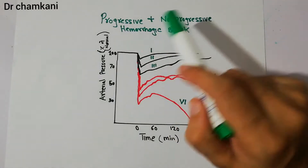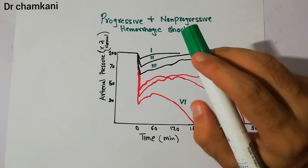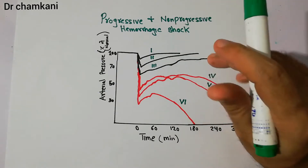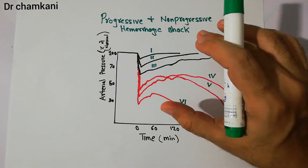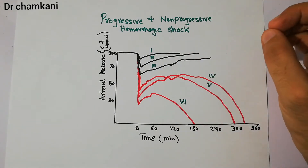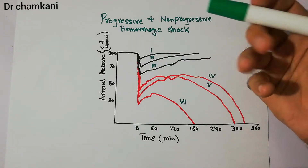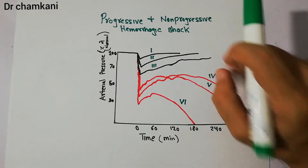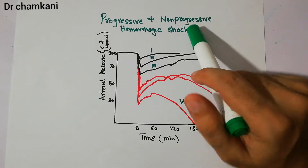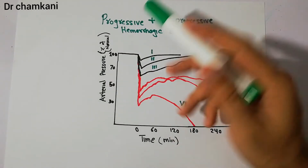Today we are going to talk about progressive and non-progressive stages of hemorrhagic shock. Shock, as we discussed previously, is the condition in which there is decreased or inadequate supply of blood such that the body tissues cannot fulfill their needs — the supply of oxygen and other nutrients is so much decreased that tissues cannot meet their requirements. The stages of shock are basically non-progressive shock, then progressive shock, and hemorrhagic shock.